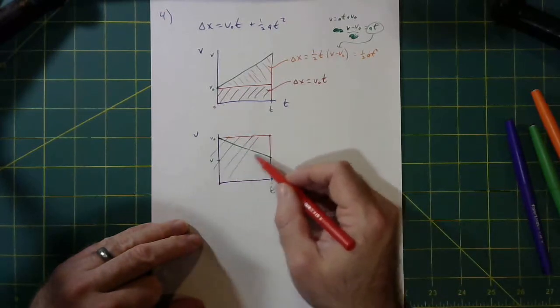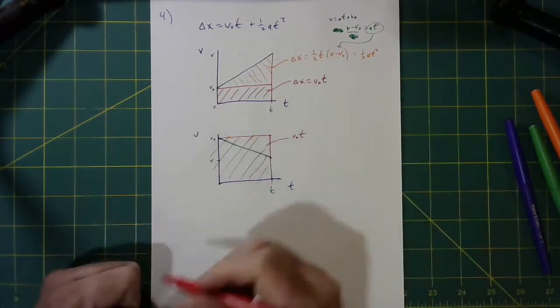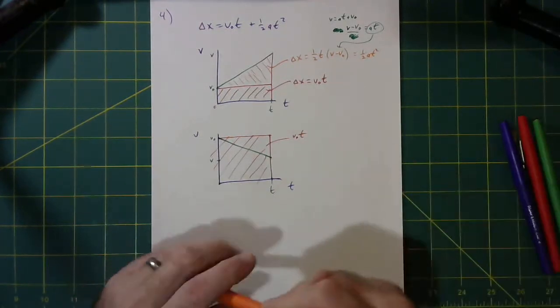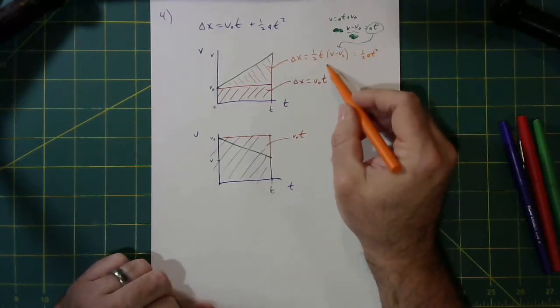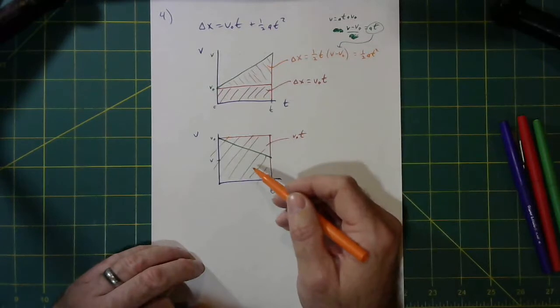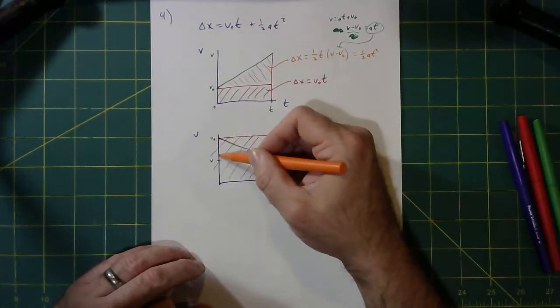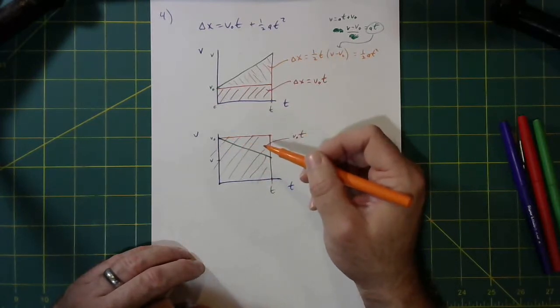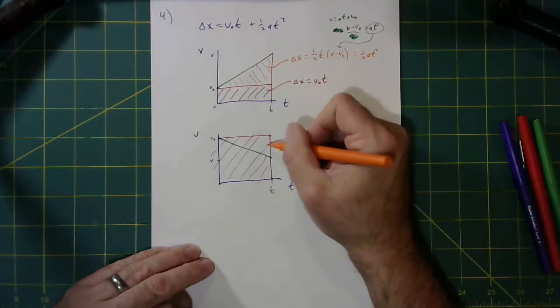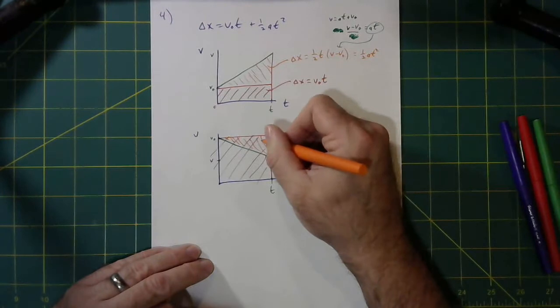This now, the red rectangle is v₀t. What would I get if I did one half at squared? That's one half t times v minus v₀. That would be half t, v minus v₀. That's like this bit here. You see what I'm saying? So I'm going to subtract, essentially, this triangle off.